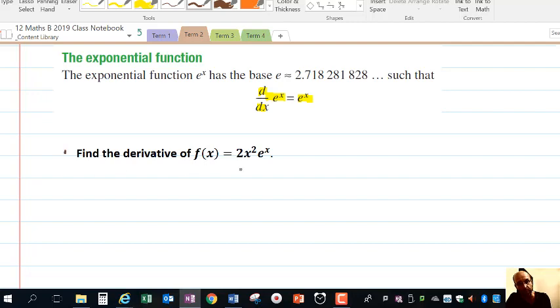Find the derivative of f of x equals 2x squared times e to the x. So we have a Product Rule. So that equals u times v. Where u equals 2x squared, v equals e to the x. And so the derivative, if we're going to use function notation, we can call it g of x times h of x.